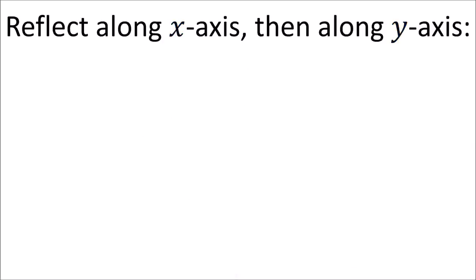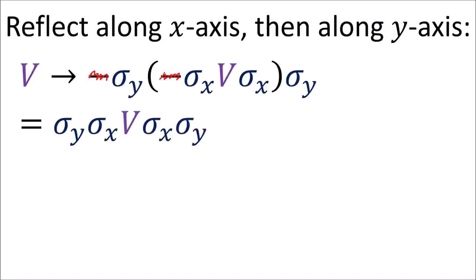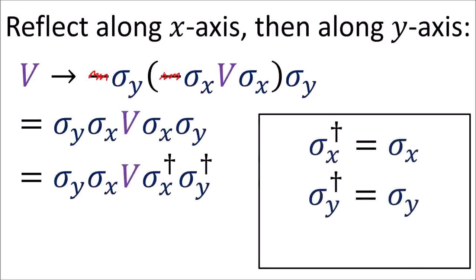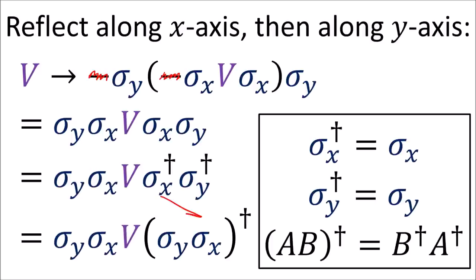Let's try doing this algebraically. To reflect along x, we do a negative sandwich with sigma x. To reflect along y, we do a negative sandwich with sigma y. The negative signs cancel. Since we know the sigma matrices are Hermitian, we can add daggers to them without changing anything.